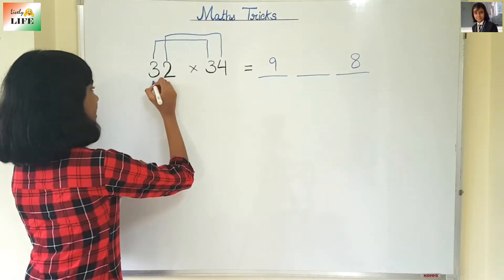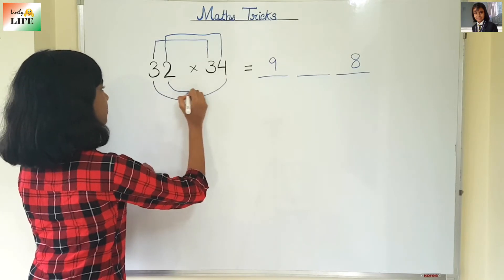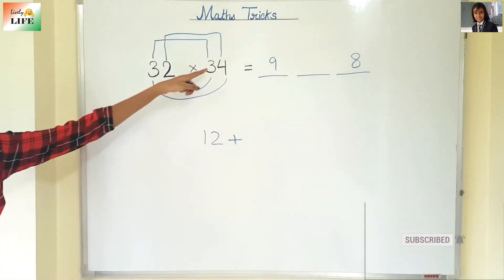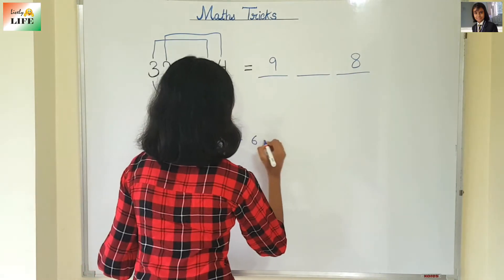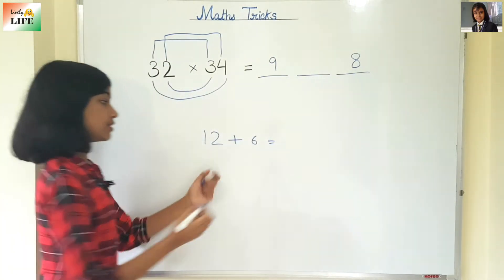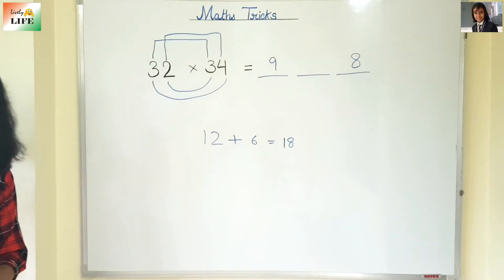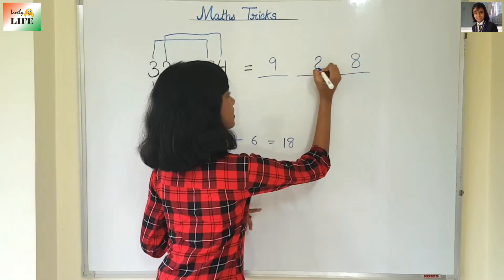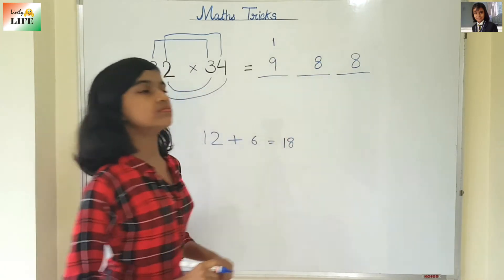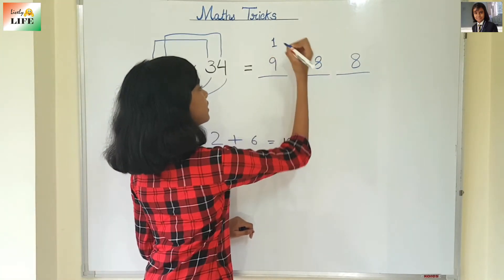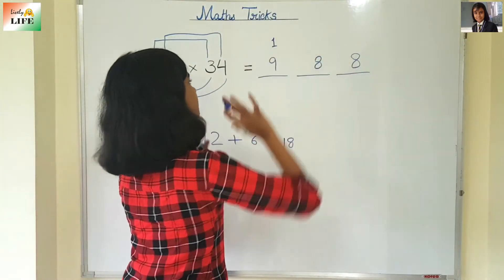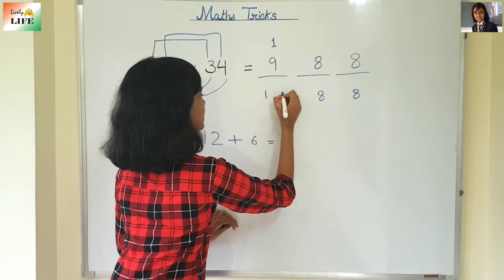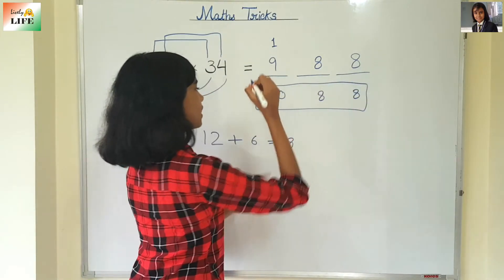Then we are going to cross multiply: 3 into 4 plus 2 into 3. 3 into 4 is 12, plus 2 into 3 is 6. 12 plus 6 is 18. Now, we cannot write 18 in the middle dash, so we are going to write 8 and 1 will be carried. So the digits become: 8 in the middle, and 9 plus 1 is 10. The answer is 1088.